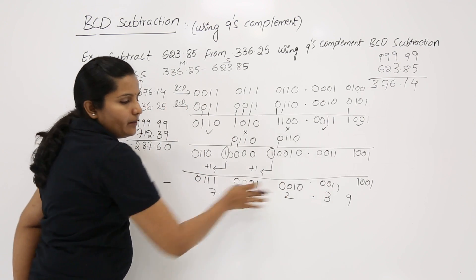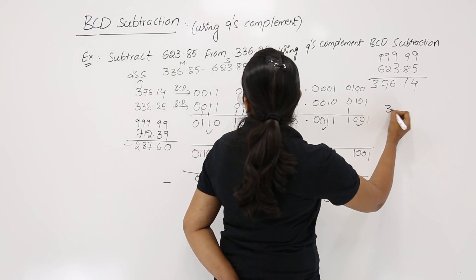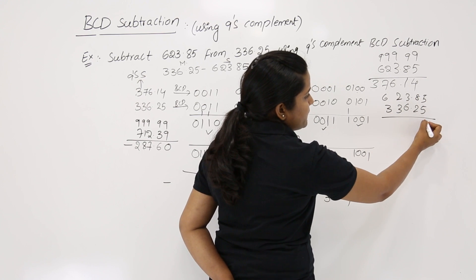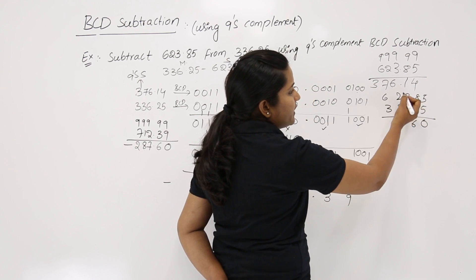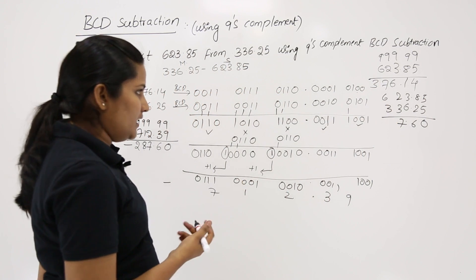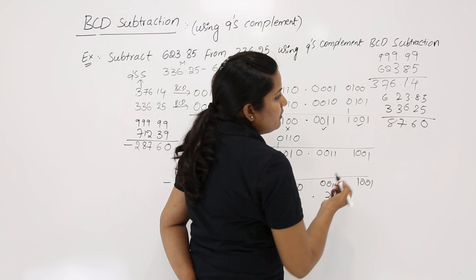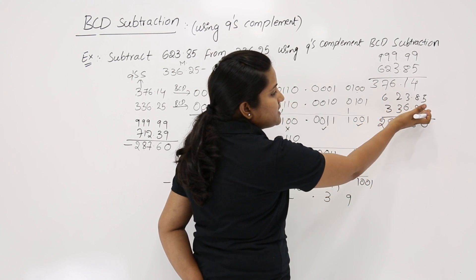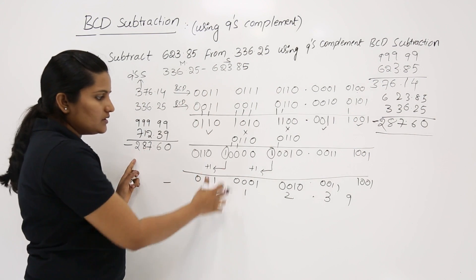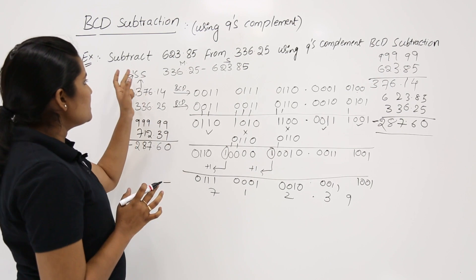As we are subtracting a larger number from a smaller number, we would not get −287.60 directly; the 9's complement form will appear first. To cross-check: 336.25 − 623.85, working digit by digit — 5−5=0, 2−8 borrows to give 6, 3 borrows giving roughly 7, 11−3=8, remaining gives 2 — confirming the answer is −287.60 via BCD 9's complement subtraction.